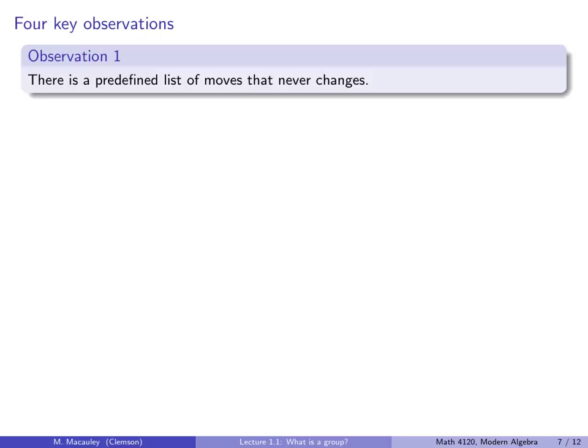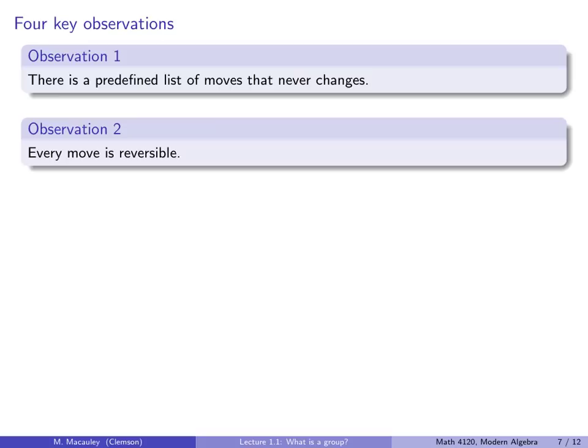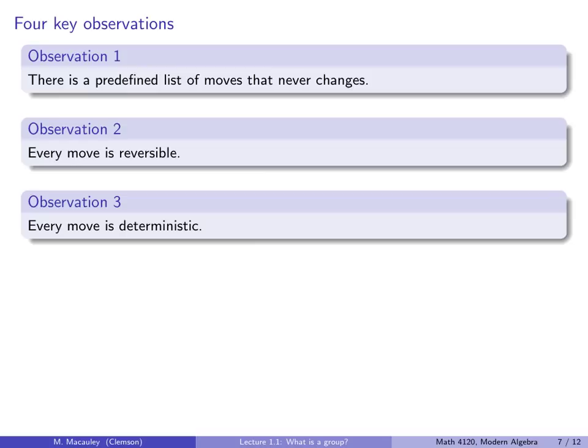Observation two, every move is reversible. If you do a sequence of twists, you can just undo those and get back to where you started. Every move is deterministic. That's observation three. So this is unlike poker, or rolling a dice game, where there's an element of chance. And also, I should say observation two, every move is reversible. That is unlike, say, checkers. You can't move backwards in checkers.